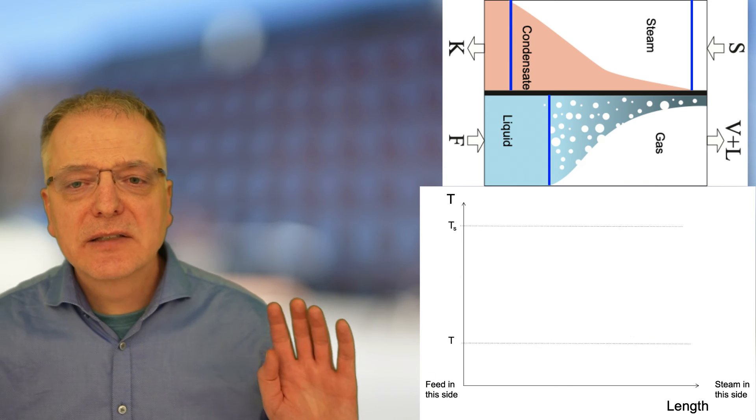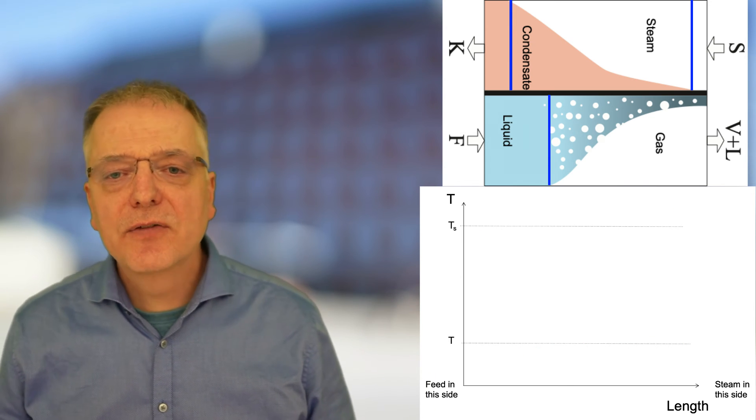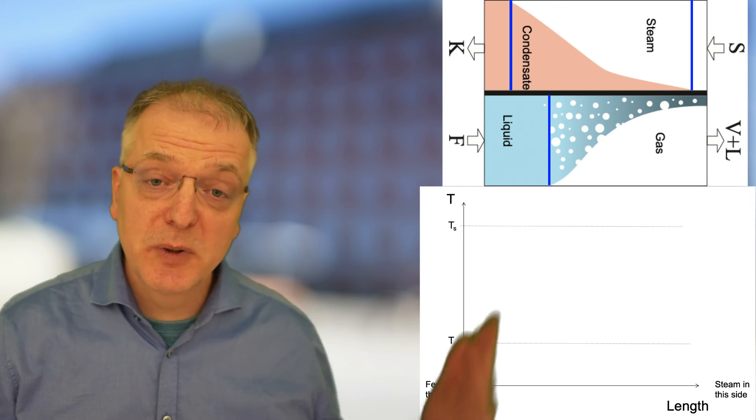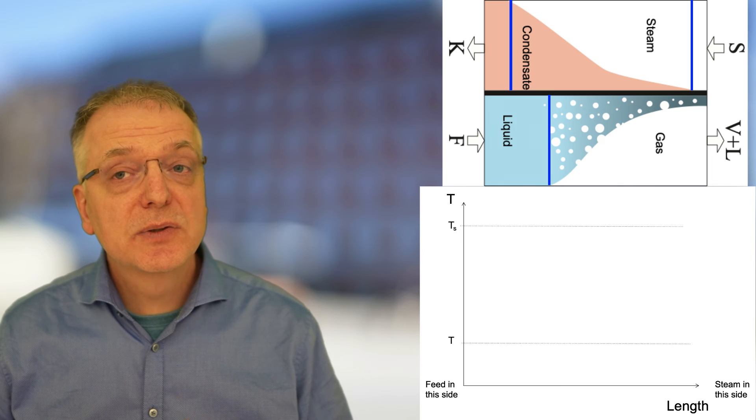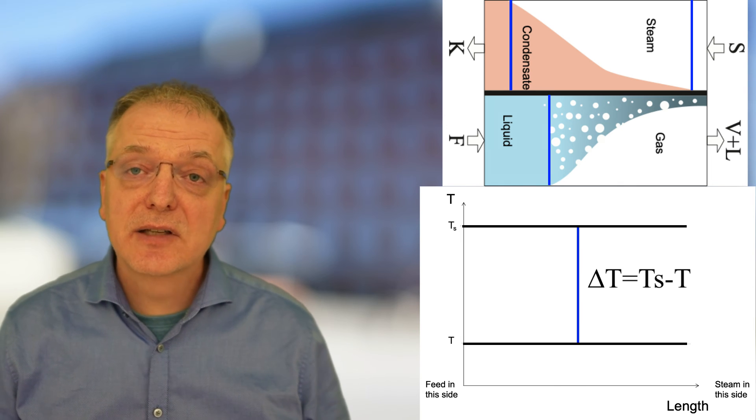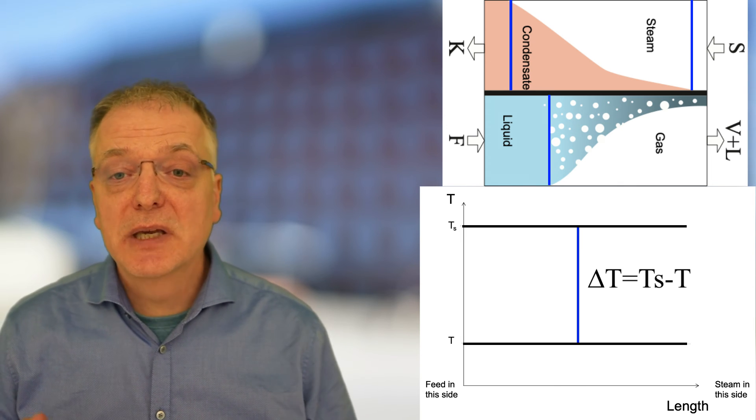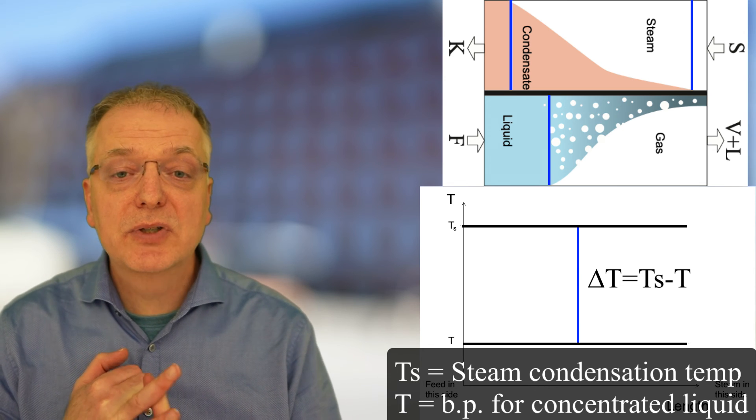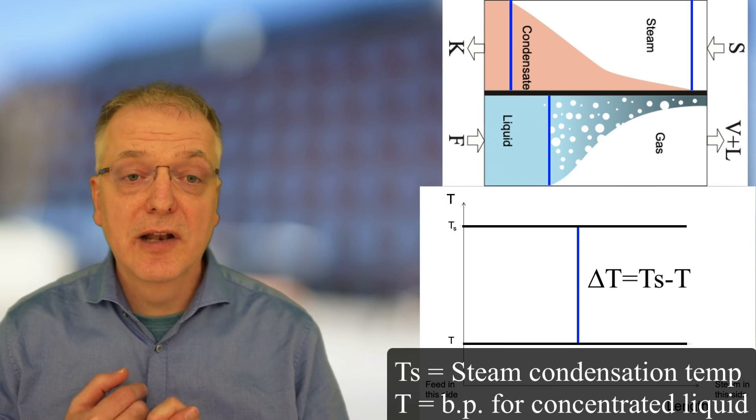So, let's simplify to get something easier to handle. Instead of using the true overall heat transfer coefficient and the true temperature difference between the two sides, let's use Ts minus T as the temperature difference. Ts being the condensation temperature of the steam and T being the temperature at which the concentrated liquid boils.